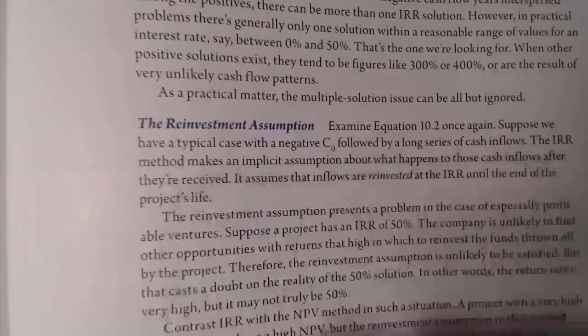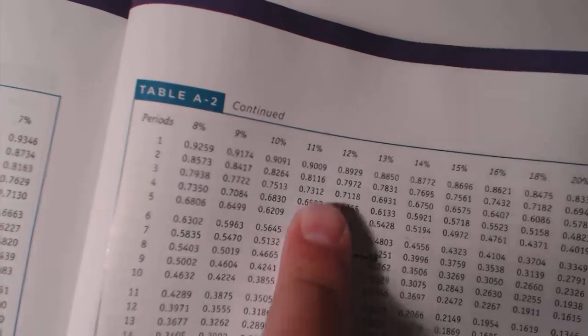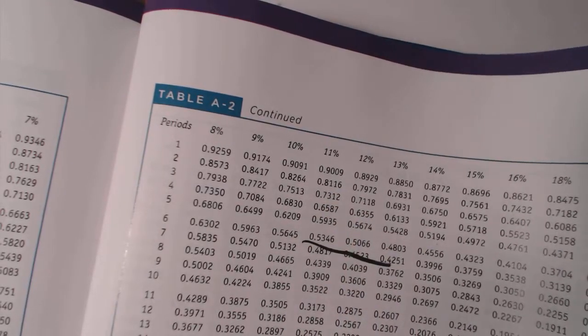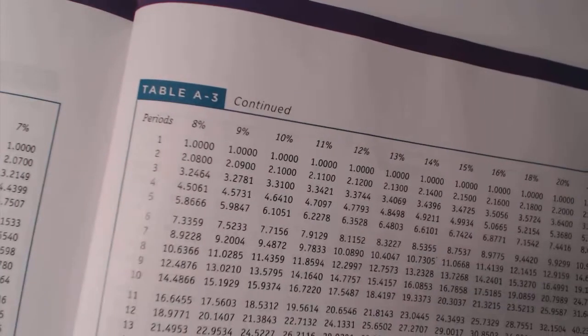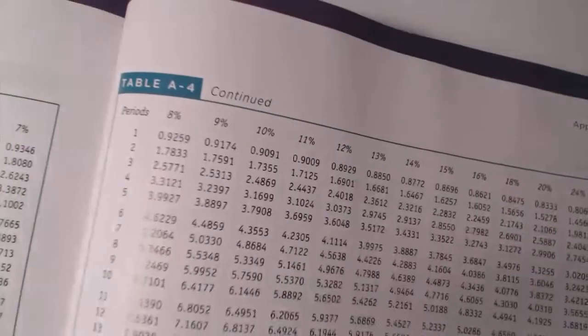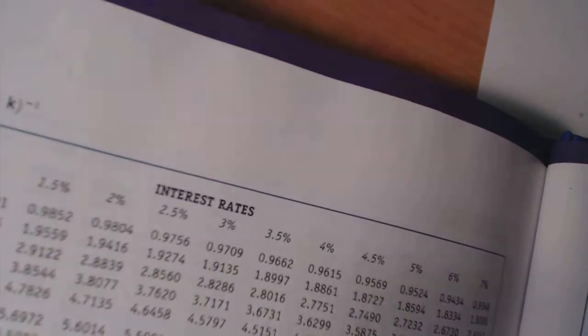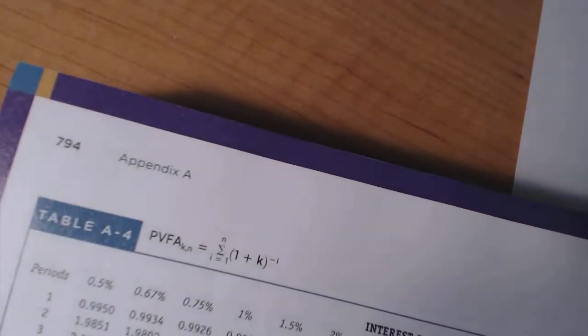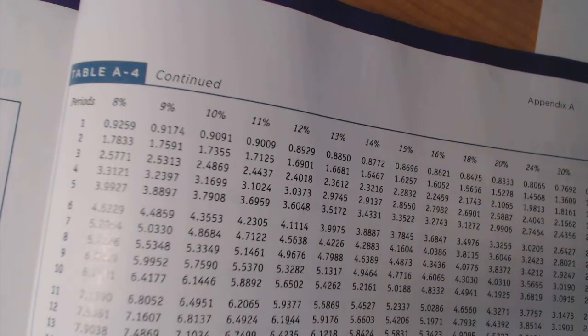Let me show you the PVF table we're working with. This is in the back of the textbook in the appendixes. We've been using the PV table on page 791 at twelve percent. Now we're going to go to the PVFA table — the present value of future annuities table — for our calculation. That table is on page 794 at twelve percent. Now let's set our equation up and let me show you how this is going to work.